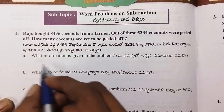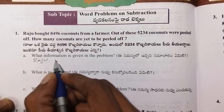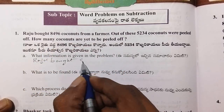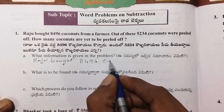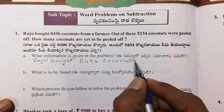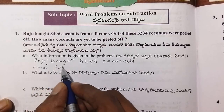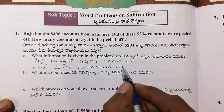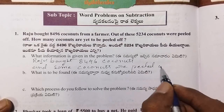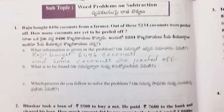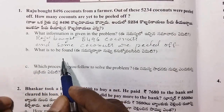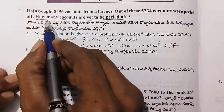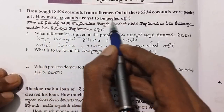Raju bought 8,496 coconuts and some coconuts were peeled off. Next, what is to be found? How many coconuts are yet to be peeled off — that is, the number of coconuts yet to be peeled off.